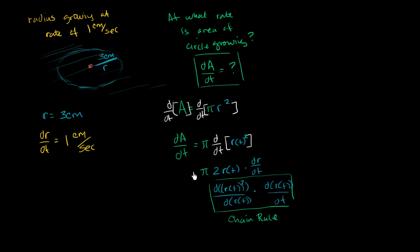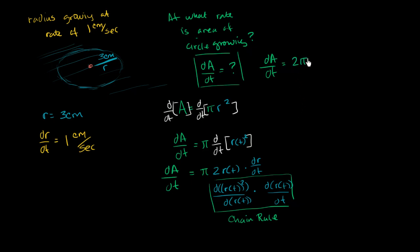So we're left with: the derivative of area with respect to time equals pi times 2 times r times dr/dt. Cleaning that up: dA/dt = 2πr(dr/dt).